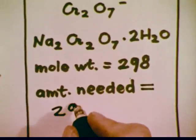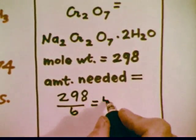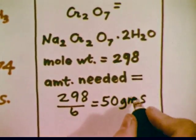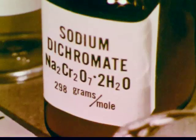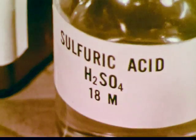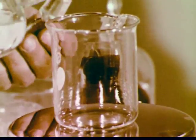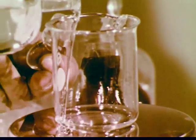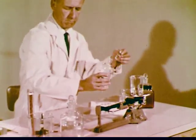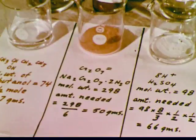Next, the amount of sodium dichromate that will be needed is calculated, and the required amount is then measured out. Sulfuric acid, the source of hydrogen ions, is also weighed out in the amount required by the equation. In this way, the amounts of the three reagents needed in the synthesis are determined and weighed out.